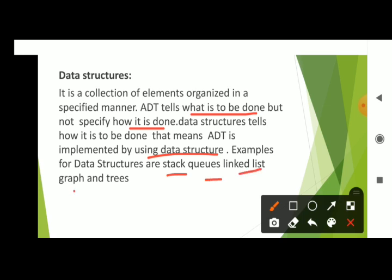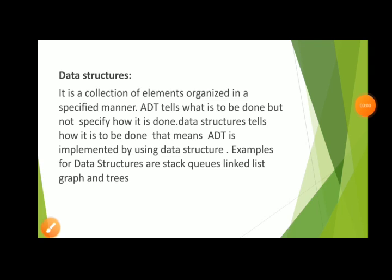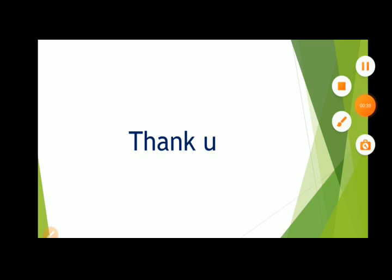Examples of data structures are stacks, queues, linked lists, graphs, and trees. The main difference: data type is a predefined data type; ADT is a user-defined data type created with the help of data types — it tells what is to be done and gives a blueprint; whereas a data structure represents the organizing of data and tells how it is to be done. Thank you everyone.